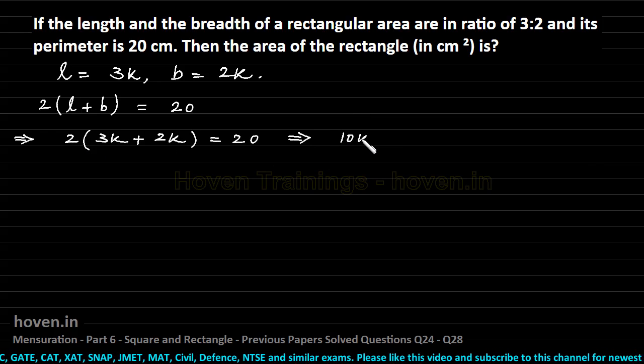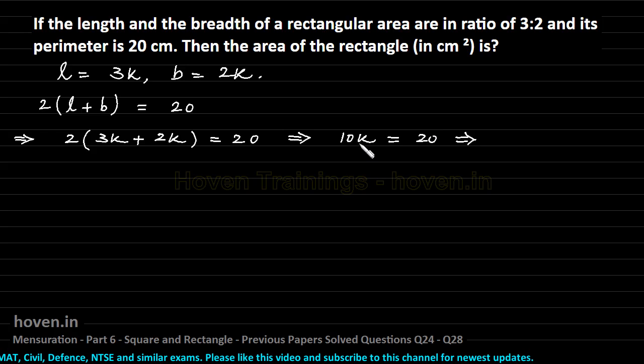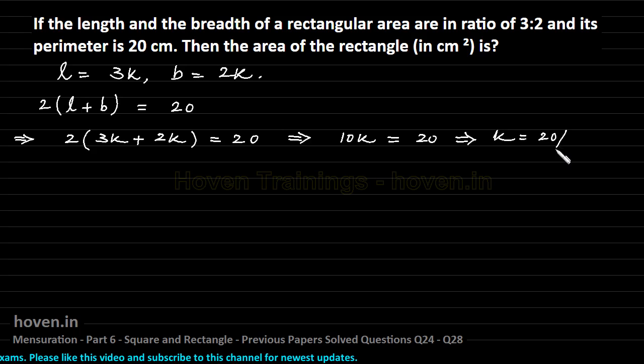We can write 10k equal to 20, which implies k is 20 by 10 equal to 2.